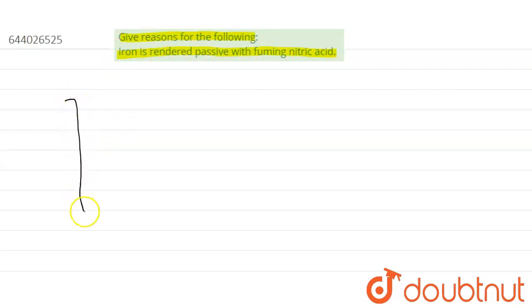Suppose this is the beaker and this is the nitric acid. HNO3 is present and this is iron block. This is the iron block. If it is kept in this fuming nitric acid,